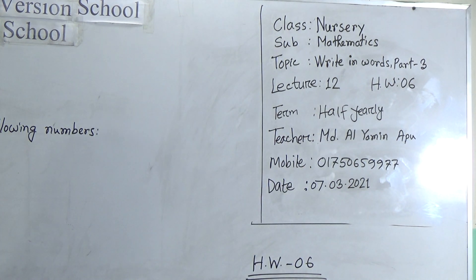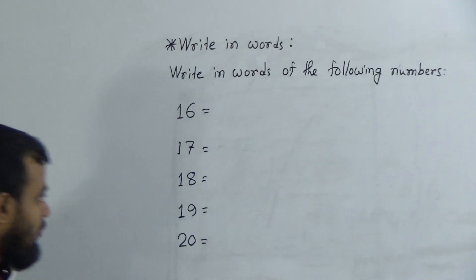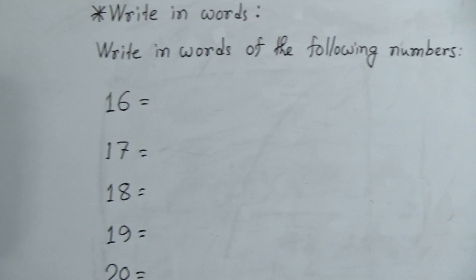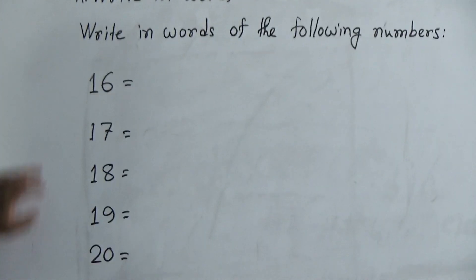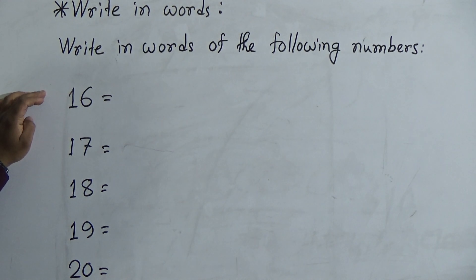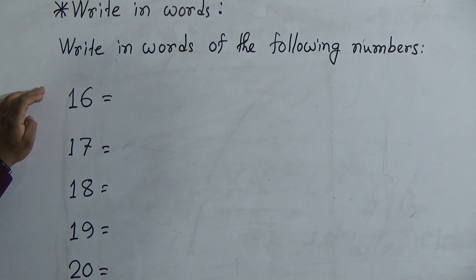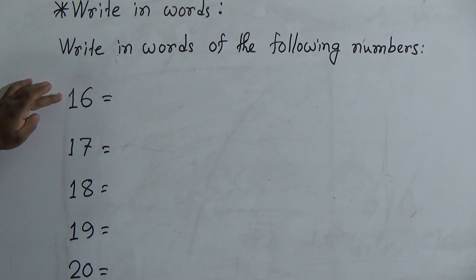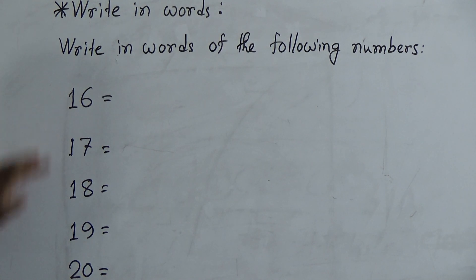My dear students, we will learn today how to write down a number from 16 to 20. In the previous two classes, we have already learned how to write down in words from 1 to 15. Today we will learn only 5 numbers, that means 16 to 20.